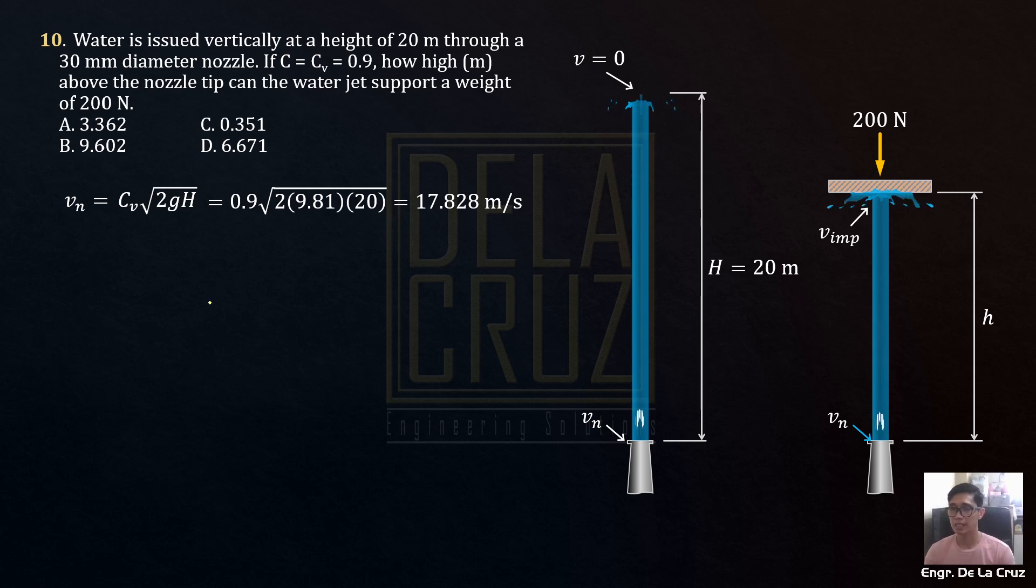Then, we also need the discharge here. When we get to hydrodynamic force. So discharge is area times velocity. This is area times velocity. It's still theoretical.